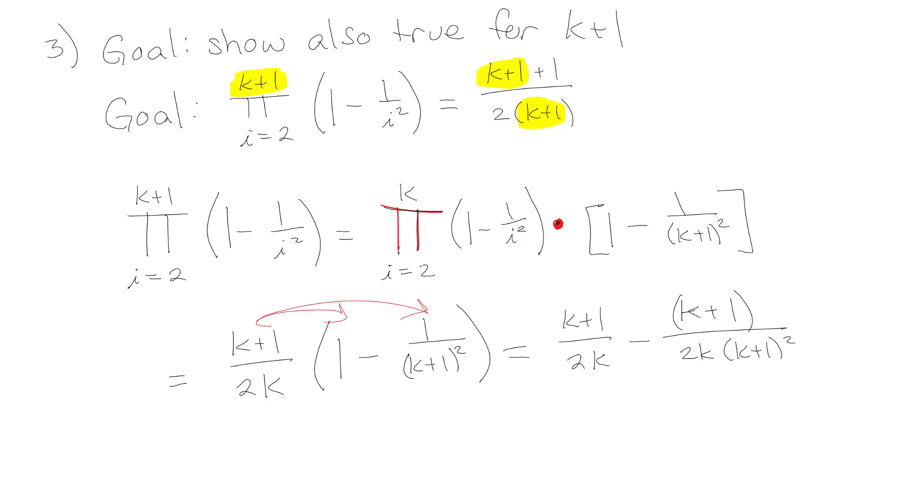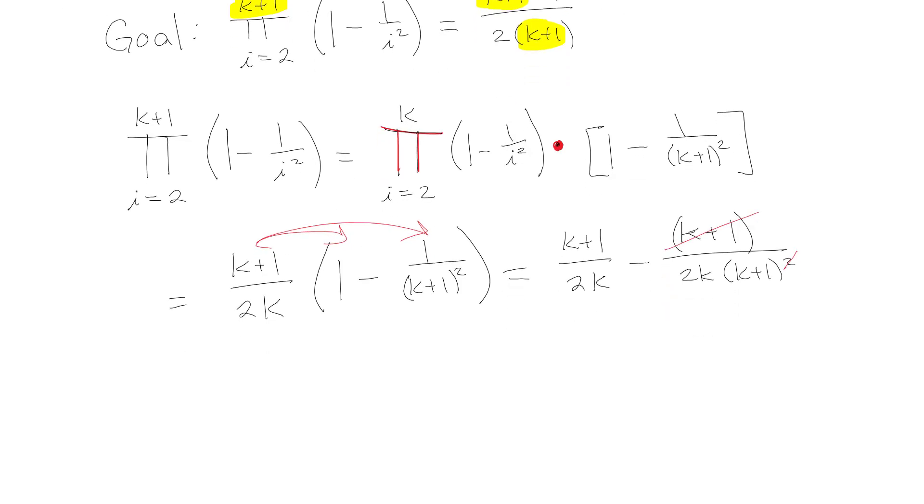Hopefully without too much pain and agony, you can realize that those are going to cancel out. So (k plus 1) over 2k minus 1 over (2k times (k plus 1)). Now we're going to get a common denominator. I'm going to multiply the top and bottom by k plus 1. On the top I've got k squared plus 2k plus 1, then I'm going to subtract off this one. Then it's over 2k times (k plus 1).